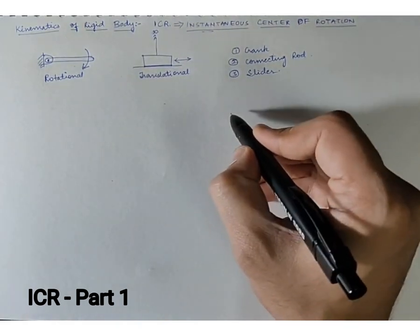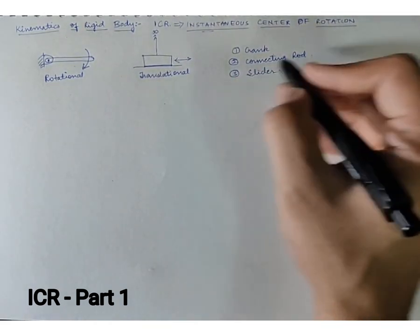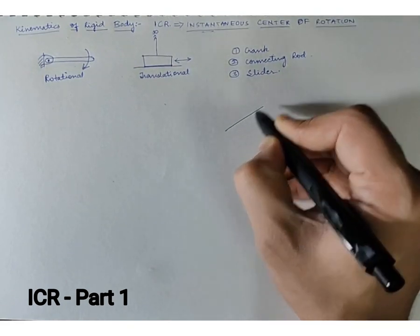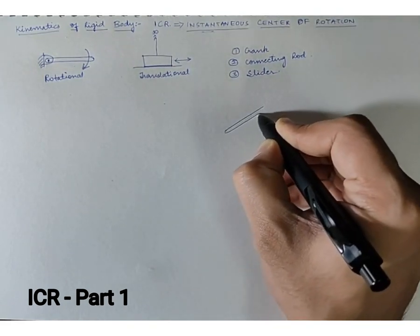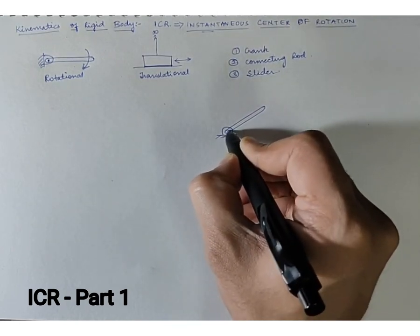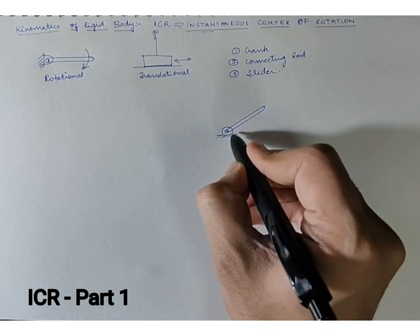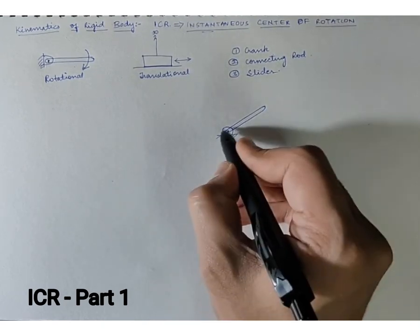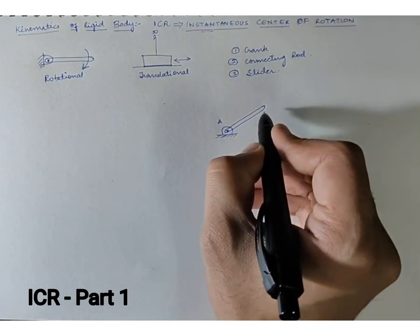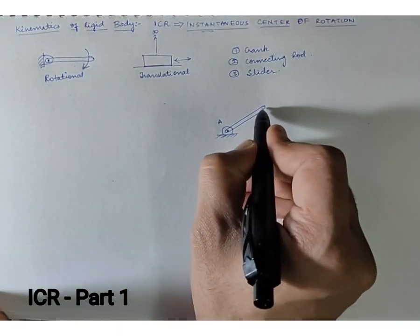So let me just draw a view for the complete mechanism. This we may call the crank. The crank is hinged at one given joint, which is at this given point. Let us call it point A. Now from here we will be drawing another link.